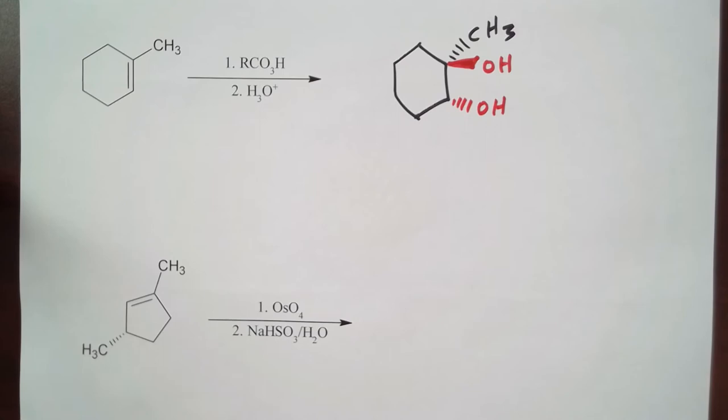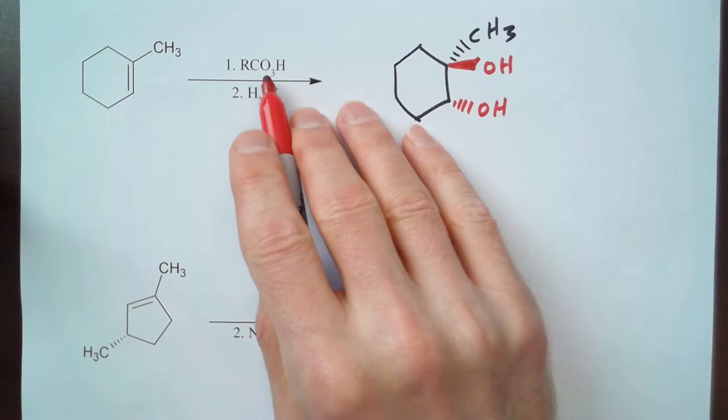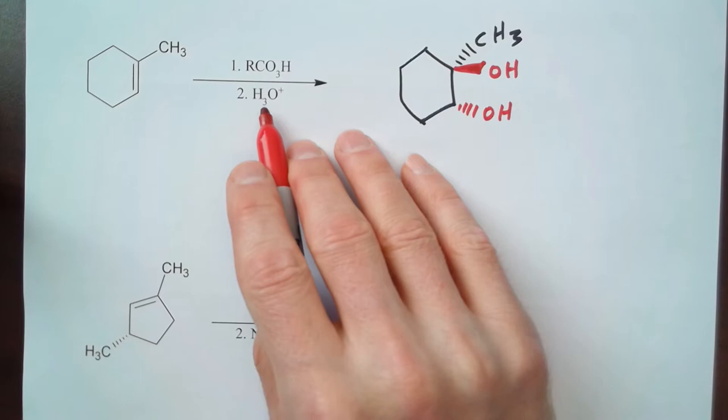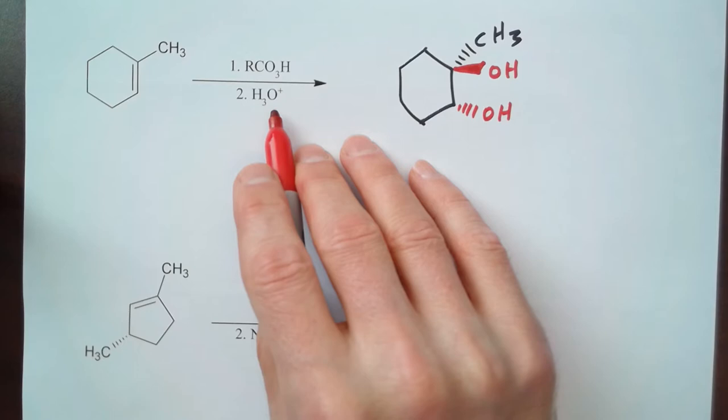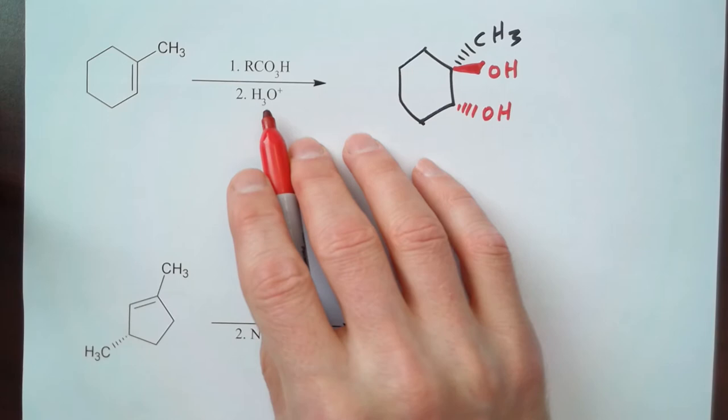Remember the reason for this is because the peroxy acid reacts to form the epoxide. So then in the next big step in this mechanism when you add the aqueous acid, it has to add from the back side of the epoxide. So that second hydroxyl group gets added on the back side to give us the anti addition.